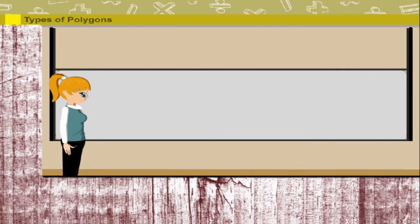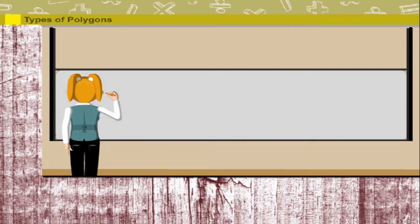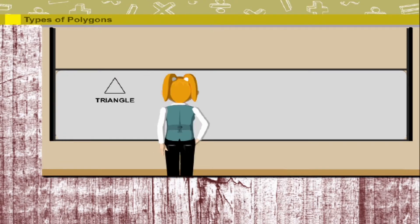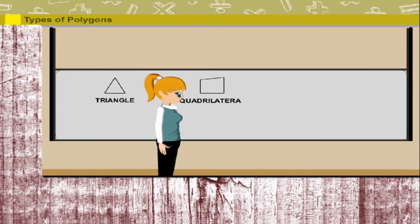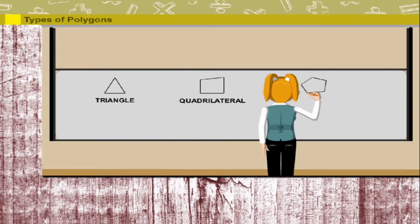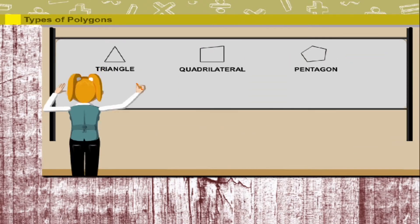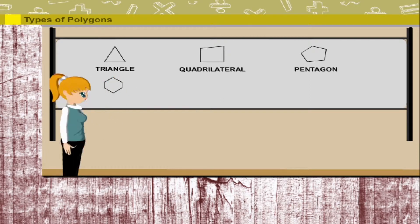Types of Polygons. Nancy is on the board making some figures with straight line segments. She makes a three-sided triangle, a four-sided quadrilateral, a five-sided pentagon, and a six-sided hexagon.